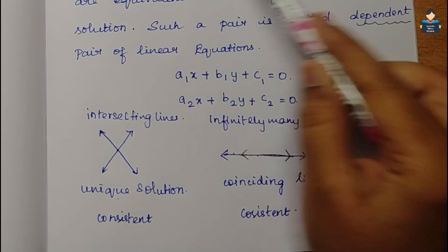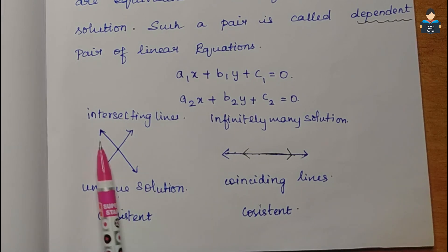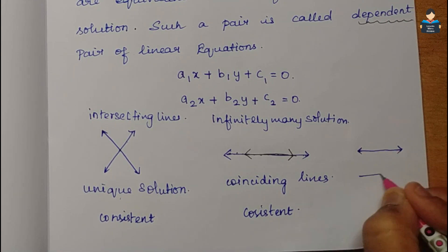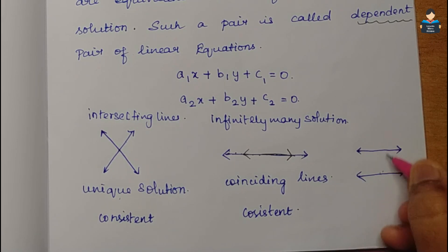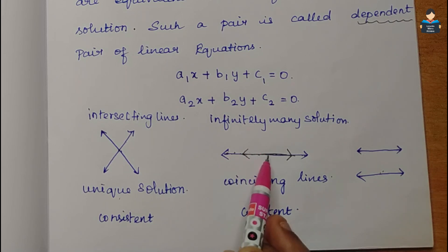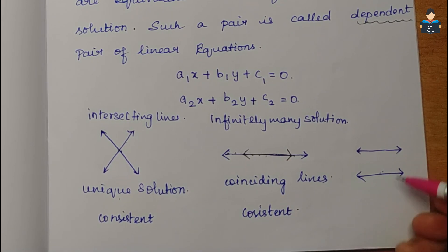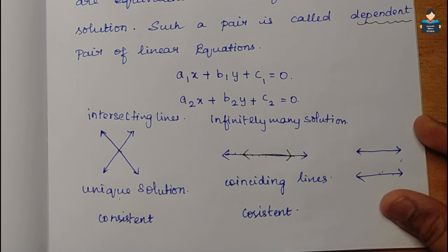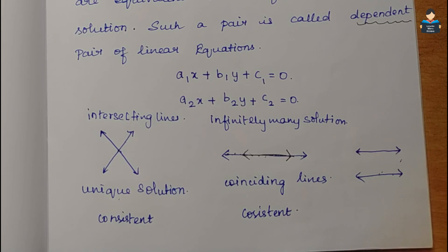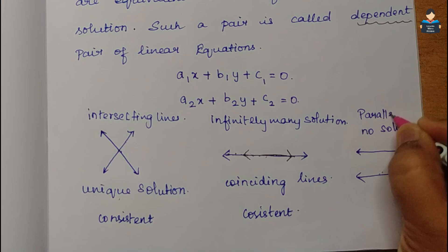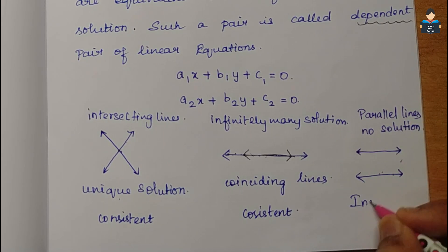If a pair of linear equations has a solution it is consistent - consistent can be intersecting lines (unique solution) or coinciding lines (infinitely many solutions). Where there is no solution - that is when the two lines are parallel lines - they will not meet at any point. Parallel lines means no solution, so that is inconsistent.